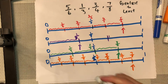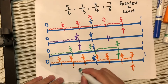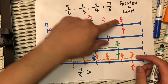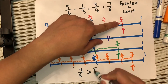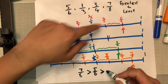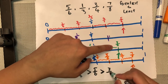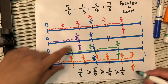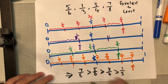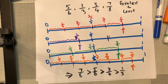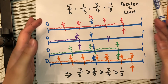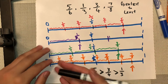Now I can see where greatest to least is. My greatest is 7/8, which is greater than the next one, 5/6. The next greatest is 3/4, and the smallest is 1/3. Give it a try — I'd suggest you use a number line to help you see which fraction is greatest and which is least.